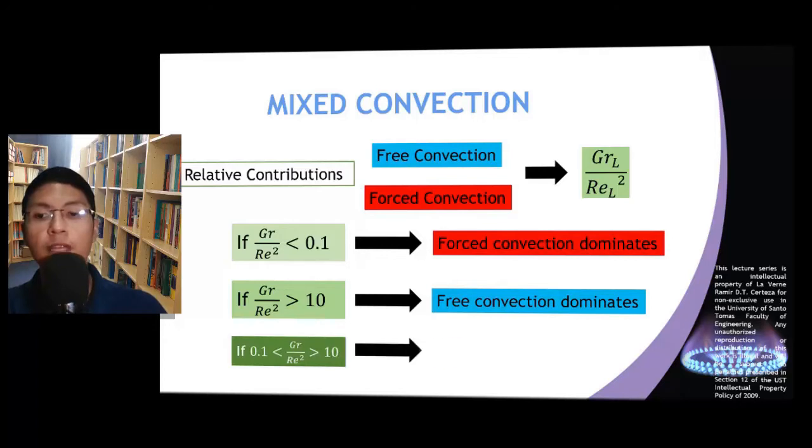Finally, if this ratio falls between 0.1 and 10, then we say that the relative contributions of both free and forced convection must be considered in the computation of the total rate of convective heat transfer.